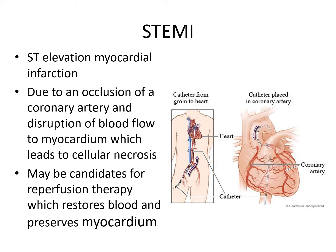An ST elevation MI is due to occlusion of a coronary artery and disruption of blood flow to the myocardium, leading to cellular necrosis. The patient may be a candidate for reperfusion therapy. In heart catheterization—the cath procedure—a catheter is inserted into the groin and advanced up to the coronary artery to unblock it and restore perfusion to the myocardial tissue distal to the occlusion, thereby preserving myocardial tissue.